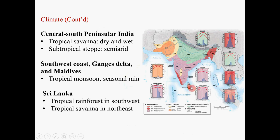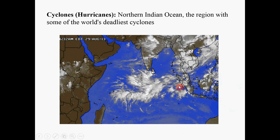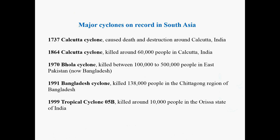The northeastern section of Sri Lanka is on the lower side of the mountain and is therefore relatively dry, giving it a tropical savannah climate. Another major contributing factor to the climate of South Asia is cyclones — what we call hurricanes in North America. The northern Indian Ocean is a region with some of the world's most severe cyclones, especially for certain coastal regions. On this slide, you can see several major cyclones on record in South Asia that caused huge loss of lives, from the 18th century all the way to more recent times. On the coastal regions of South Asia, hurricanes are a major factor impacting local conditions.